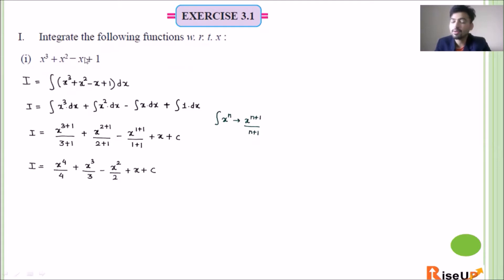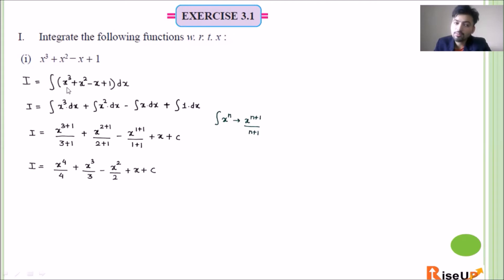If we have no name for this, just as we take y or f(x) for a derivative, similarly we take I for integration. So I equals the integration of x³ + x² - x + 1, into dx. Now there are 4 terms, so we can split them: I equals integration of x³ dx plus integration of x² dx minus integration of x dx plus integration of 1 dx.